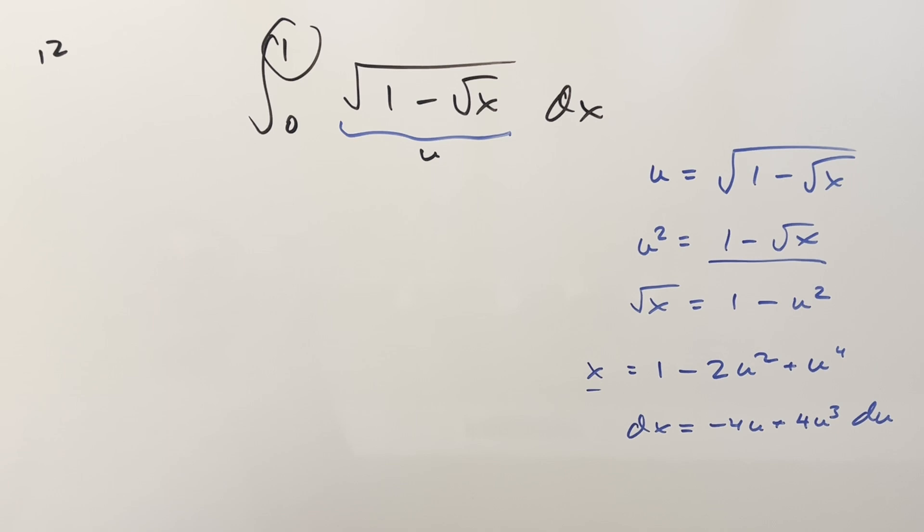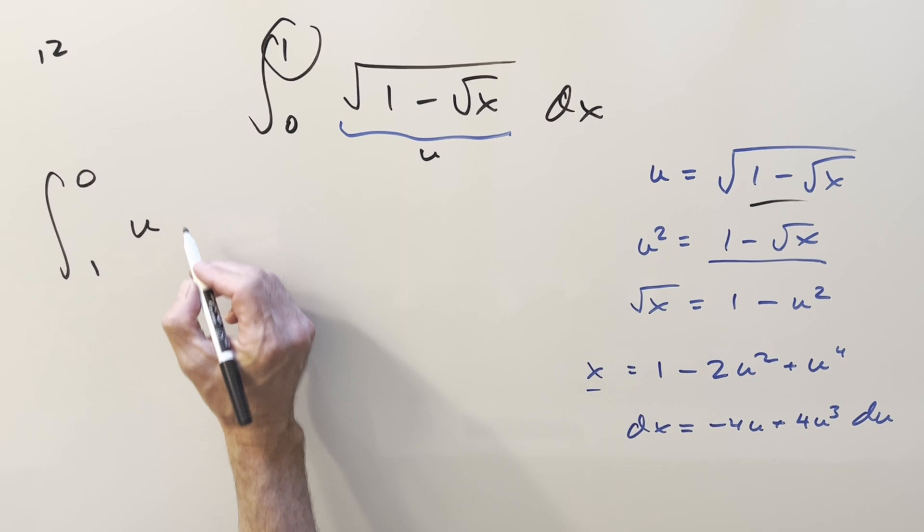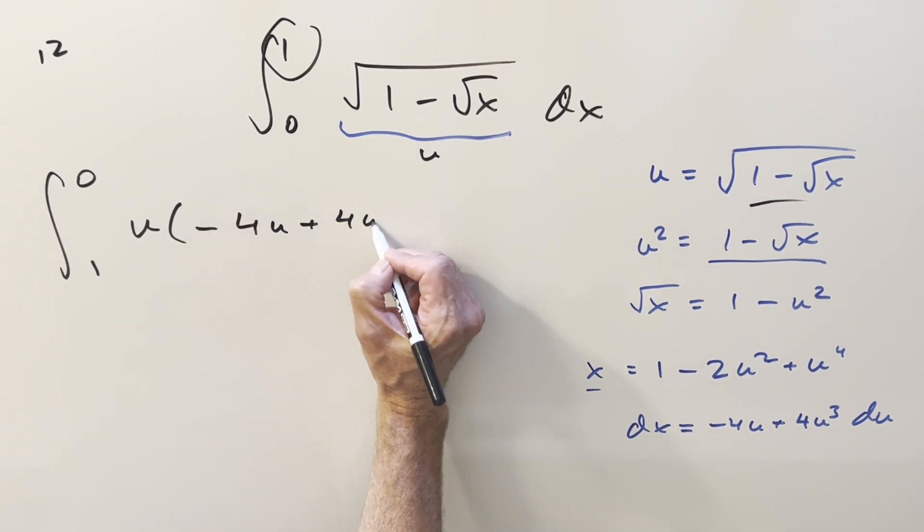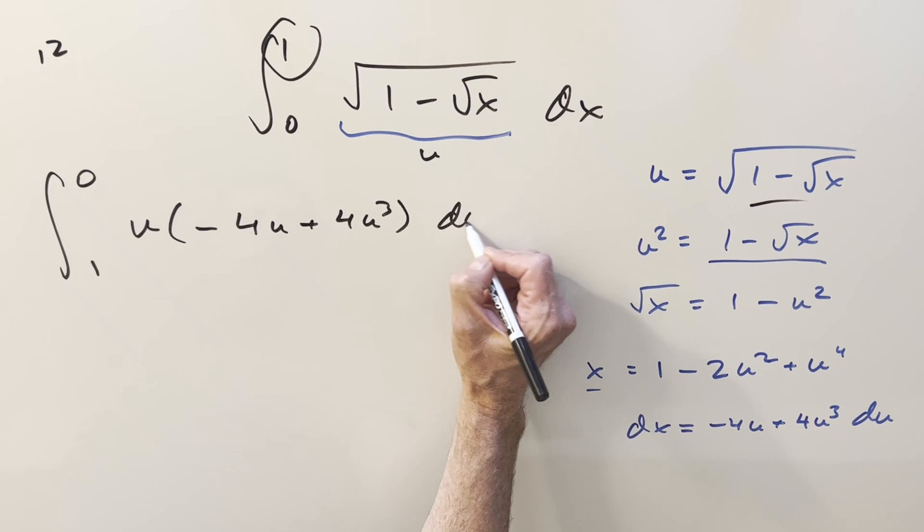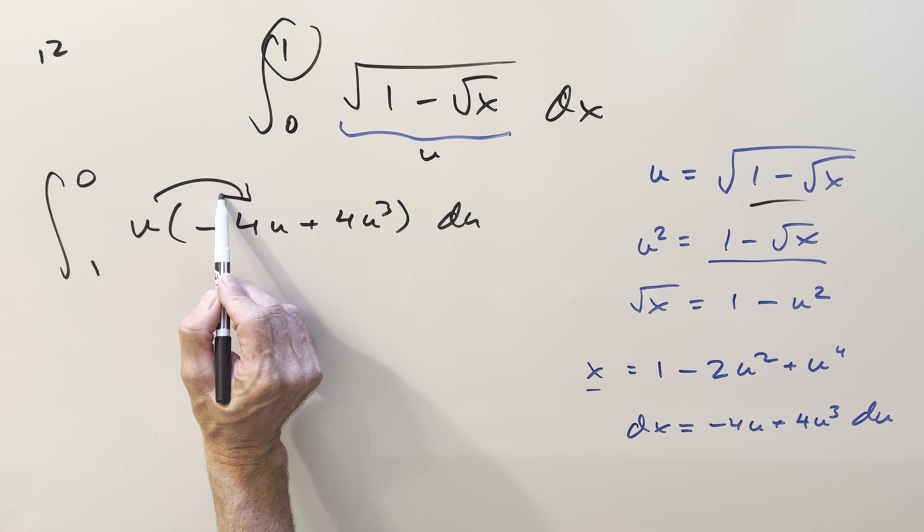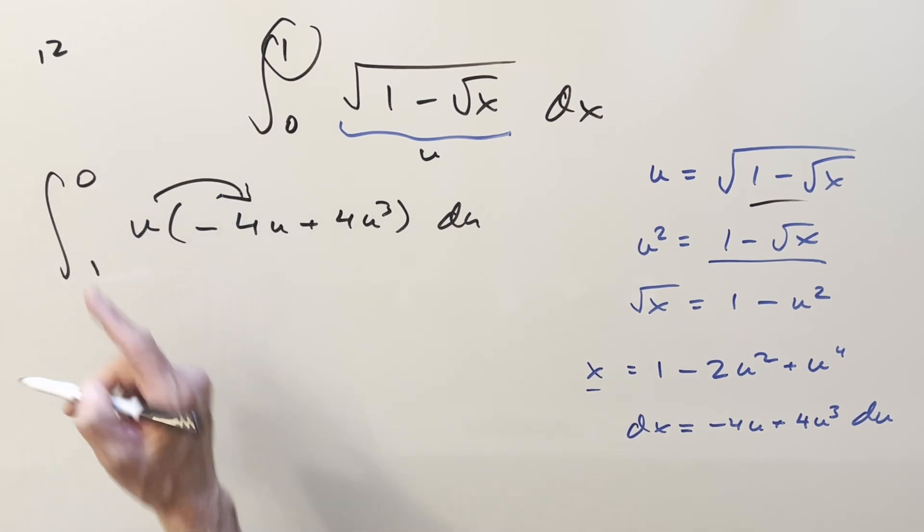Okay, now we can substitute, come back here. When we plug in 1, this thing's going to become 0. Plug in 0, and that's a 1. Now, this here, we have u, and then our dx value is going to be minus 4u plus 4u cubed du.